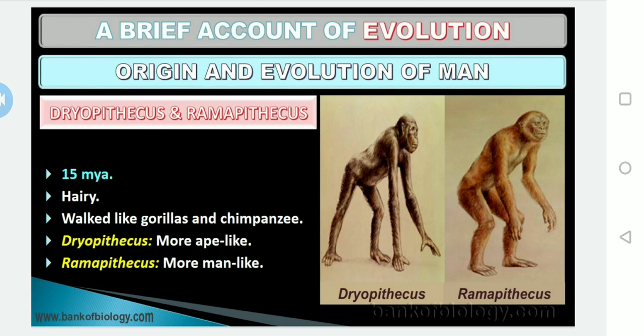They had slender limb bones, and short arms. Their jaws and teeth were more similar to human appearance. With the development of the brain and forelimbs, Ramapithecus could pick up and manipulate sticks and stones for simple tasks such as frightening enemies. They were hairy and walked like gorillas and chimpanzees — that is, tetrapodally. Dryopithecus is more ape-like while Ramapithecus is more man-like.